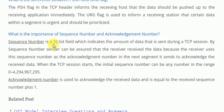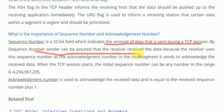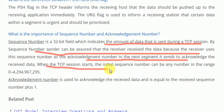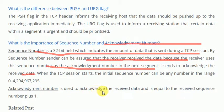What is the difference between sequence number and acknowledgement number? The sequence number is a 32-bit field indicating the amount of data sent during a TCP session. The sender is assured the receiver got the data because the receiver uses the sequence number as the acknowledgement number in the next segment. The initial sequence number can be any number in the range of 0 to 4,294,967,295. The acknowledgement number is used to acknowledge received data and equals the received sequence number plus one. This concludes the TCP interview questions — the next topic will be covered in the next video.